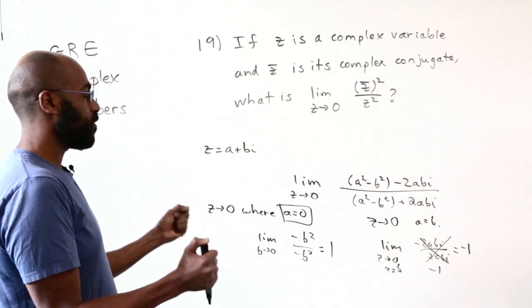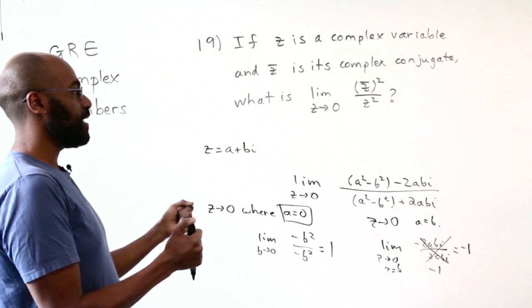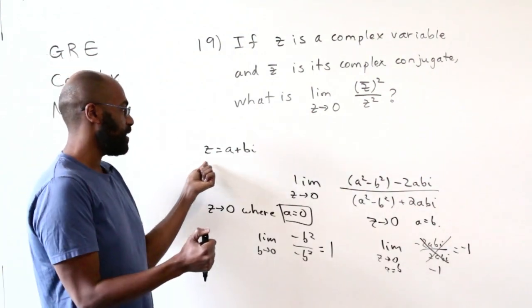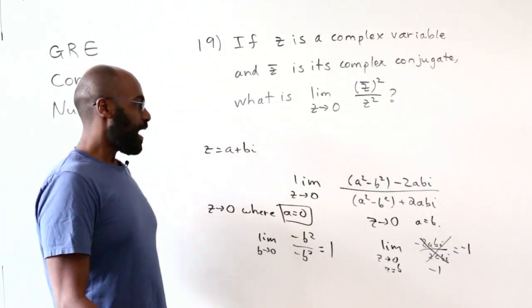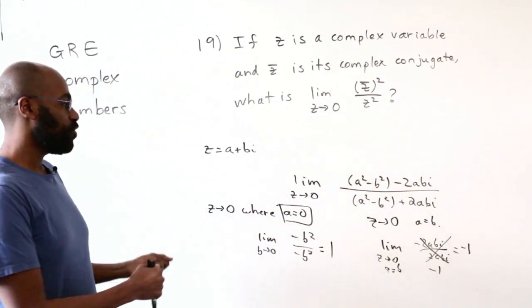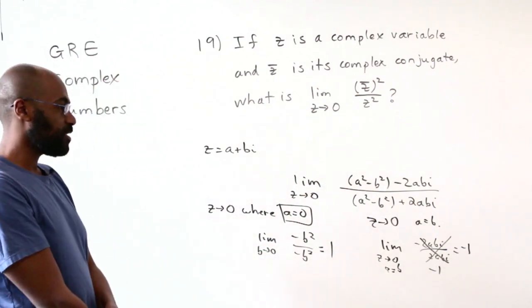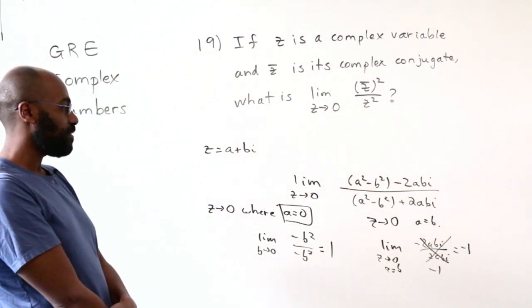This is sort of the brute force way of going about this, but the thing is, how do you come up with these ideas yourself? You'd have to write down z equals a plus bi, actually get these expressions explicit, and then think about the paths that you want to choose in order to see that this limit doesn't exist because you have different limits depending on the path that you take.